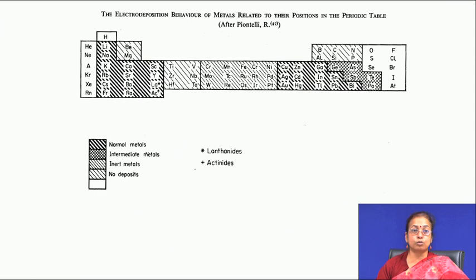For electro deposition you cannot use just any kind of substrate — the substrate has to be highly conductive. Non-conducting surfaces cannot be used as substrates in electro deposition. So usually substrates are highly conducting in nature.